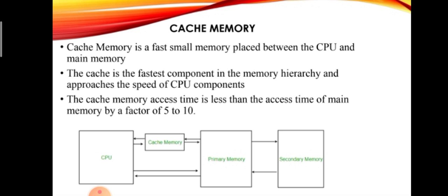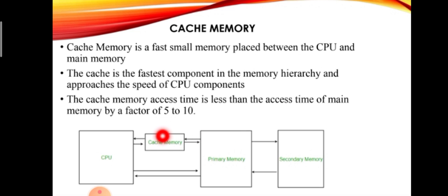Cache and memory registers can be added to the cache. When you have to access the main memory data, the processing will be slow. This is the main memory, so you can set the main memory data. If you have to access through the cache, you can access the cache through.